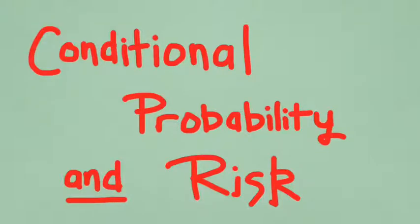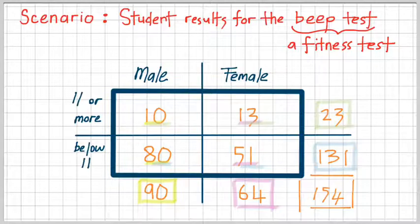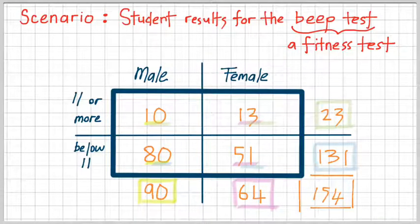Kia ora whanau. This video is about conditional probability and risk. If you haven't watched the previous episode, I suggest you watch that episode before you pay attention to the details in this one. The scenario we're going to be using is student results for the beep test, which is just a fitness test. This is the same example from the previous episode, so if you've seen that video, this should be quite familiar to you.